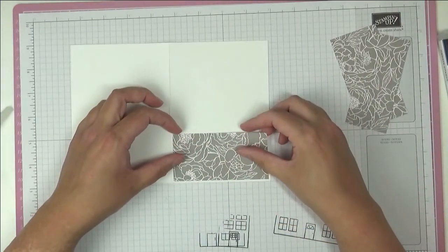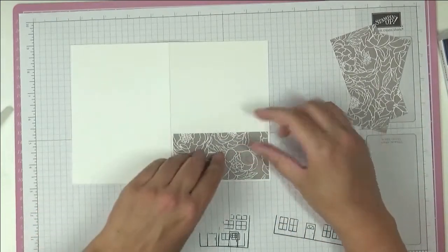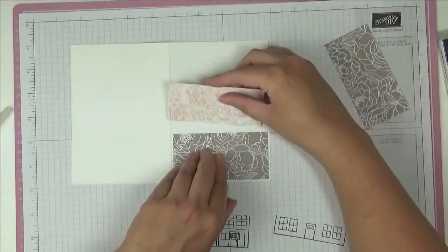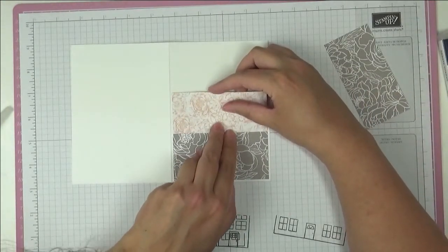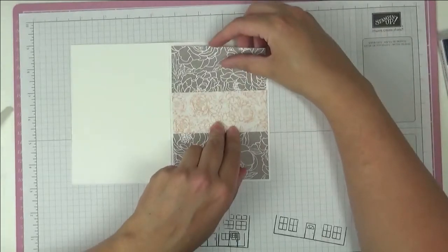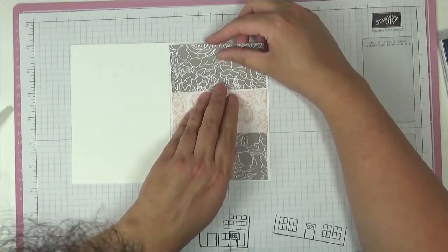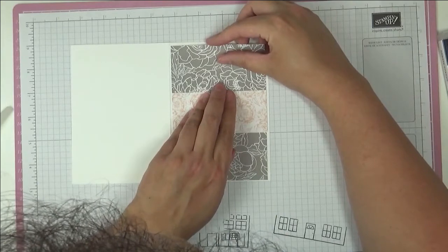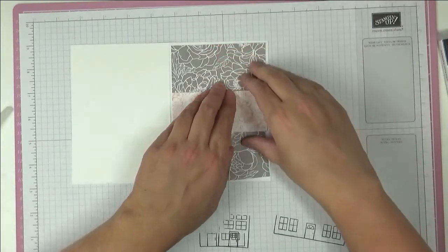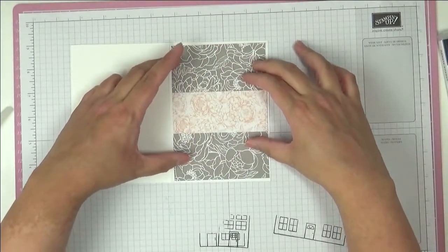So we're just going to show you what you're going to do. You've got a piece here and then we're going to have a little piece here and then we're going to have our piece here, and that's how it's going to look.